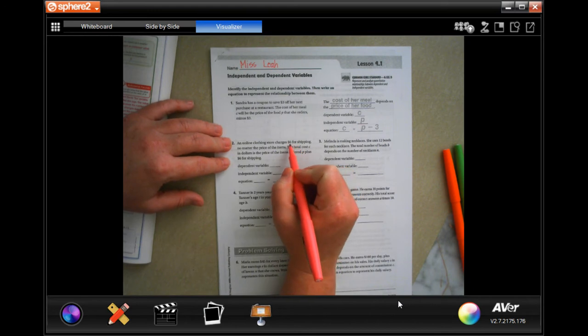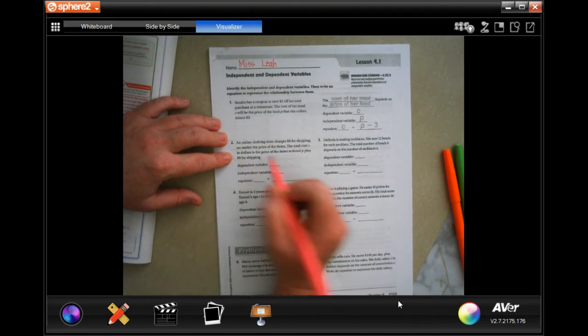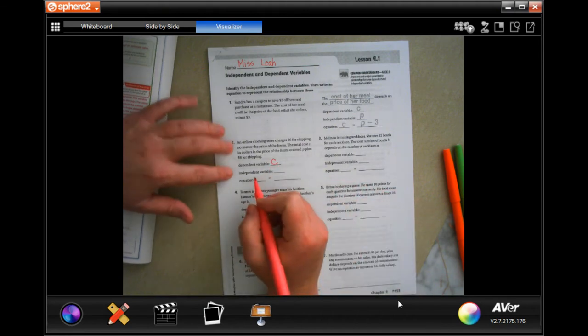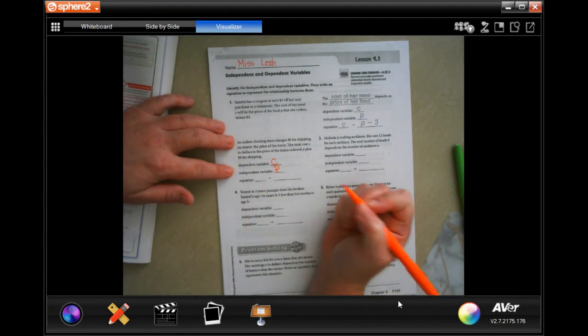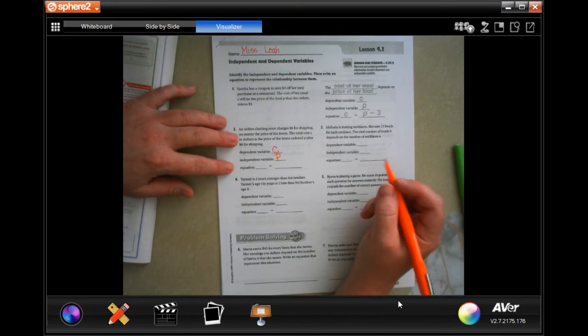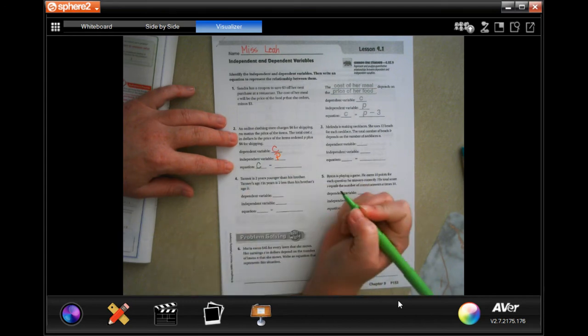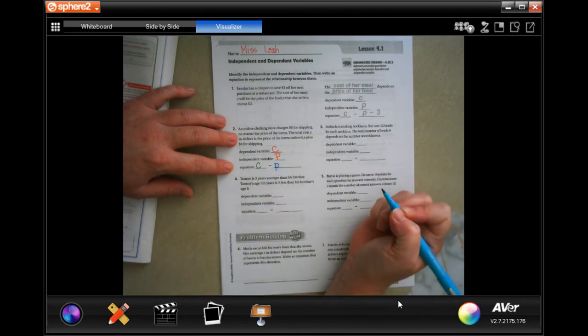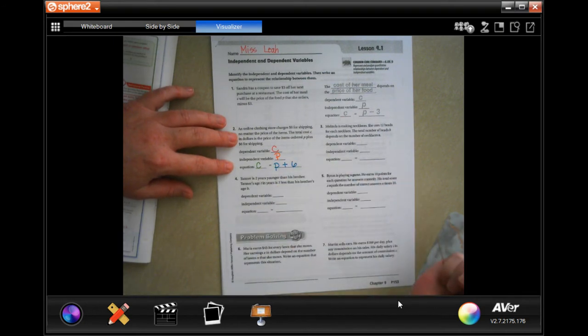So an online clothing store charges $6 for shipping, no matter the price of the items. The total cost in dollars is the price of the items ordered, plus $6 for shipping. The dependent variable is going to be the cost in dollars. The independent variable that's not going to change no matter what, that's going to be that $6. So your equation will be the cost depends on the price of the items that you're purchasing and $6 for shipping.